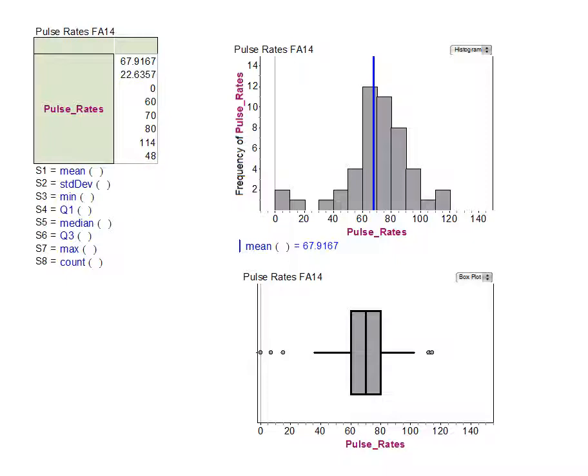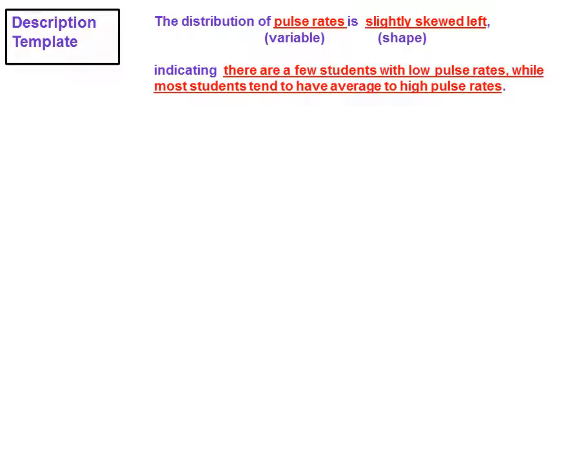So let's talk about this a little bit based on what we've seen so far. Let's go ahead and describe the distribution of our data for pulse rates. The distribution of pulse rates is slightly skewed left, indicating there are a few students with low pulse rates while most students tend to have average to high pulse rates.